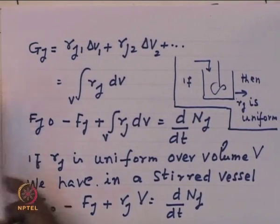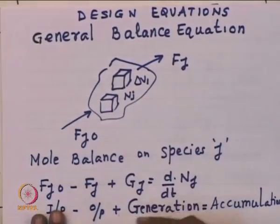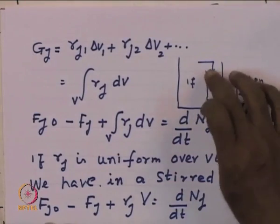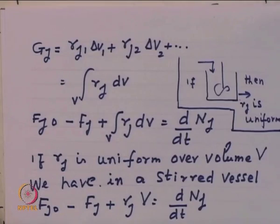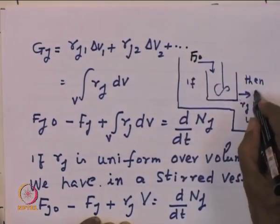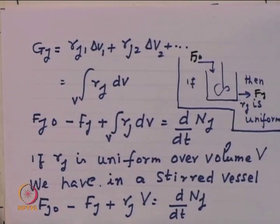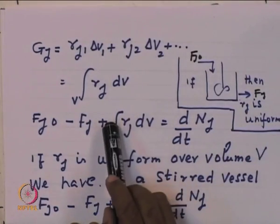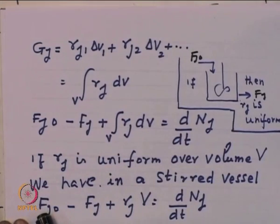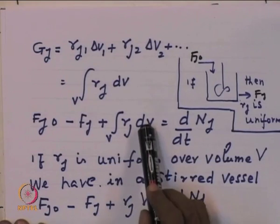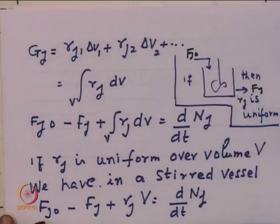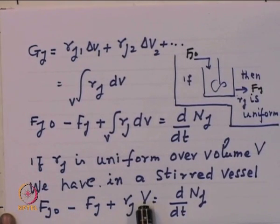If the equipment has a stirrer such that composition, temperature, and other intensive variables are essentially the same at different points — a stirred vessel — then R_j is uniform everywhere inside the equipment. We can take R_j outside the integral, and the equation becomes: F_j0 − F_j + R_j·V = d(N_j)/dt. This is the statement of material balance for the case of a stirred vessel.